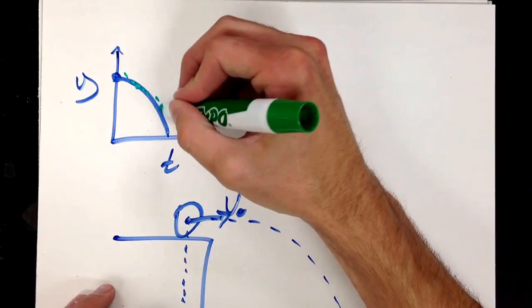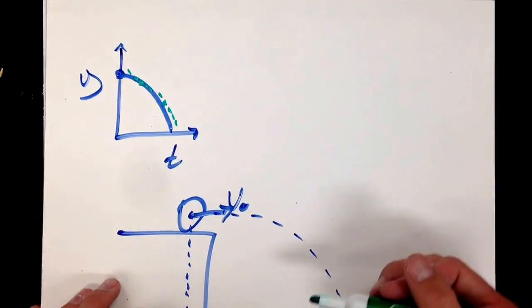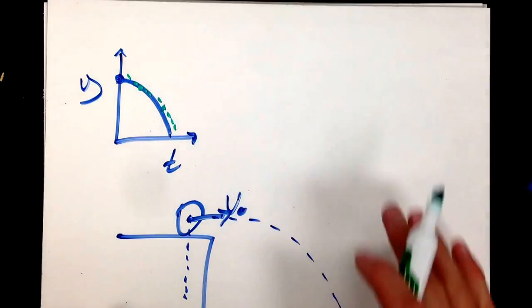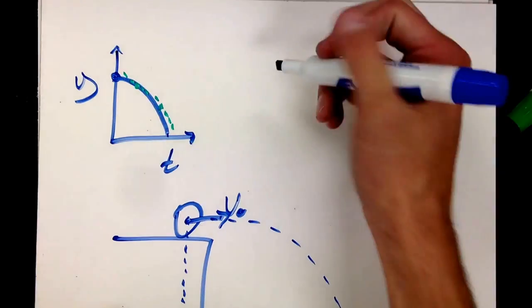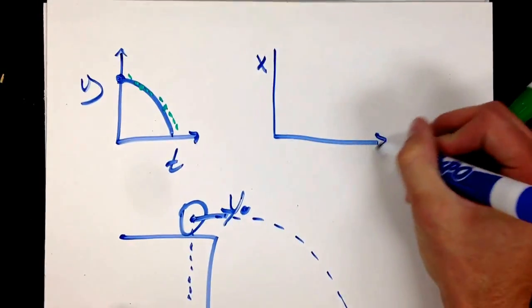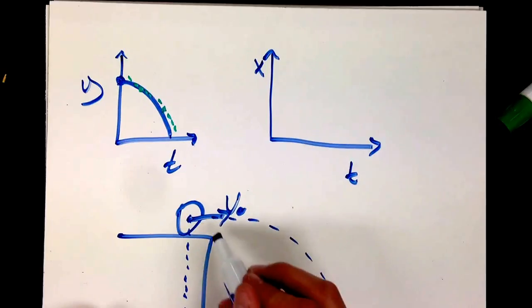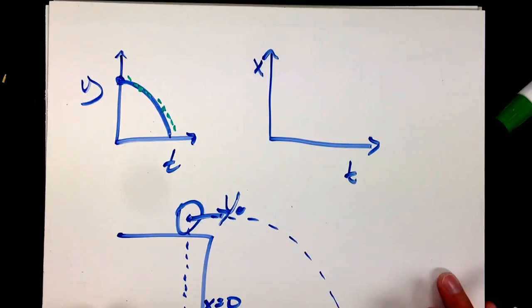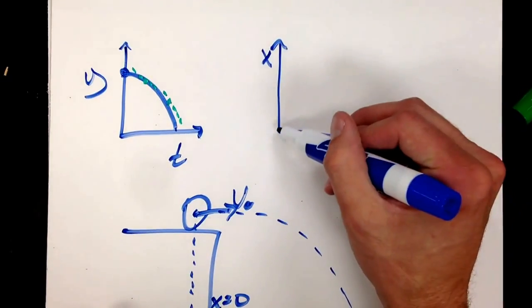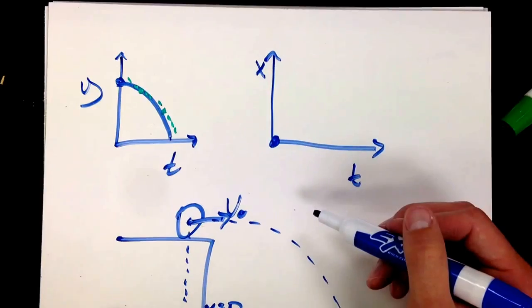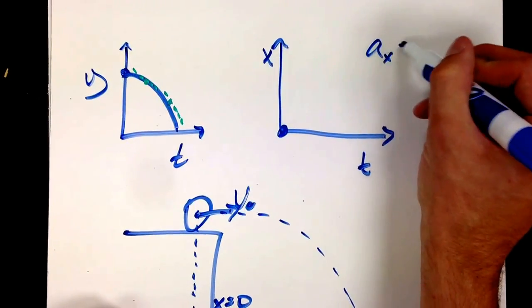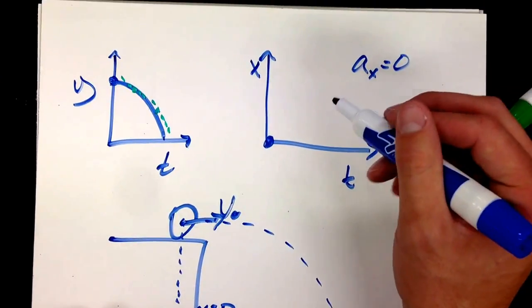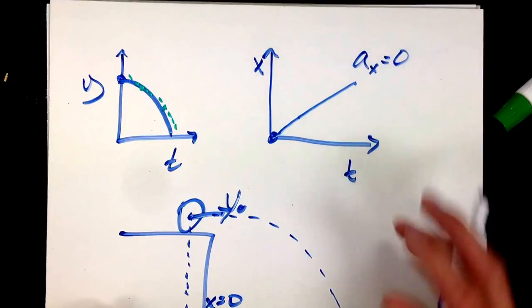We've done this graph before with an object that's just falling down, because that's basically what this object is doing — it's falling but also moving forward. For the x position versus time graph, let's say the edge of the table is x equals zero. My object starts at x equals zero. Since there is no acceleration in the x direction, I won't get a parabolic position graph for x — it will actually be linear.